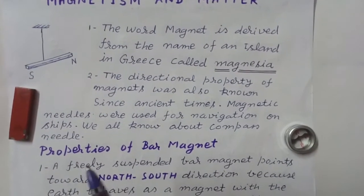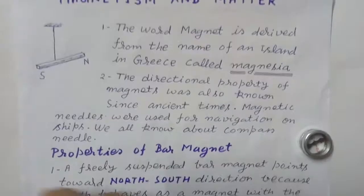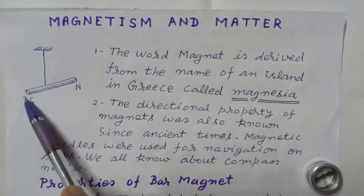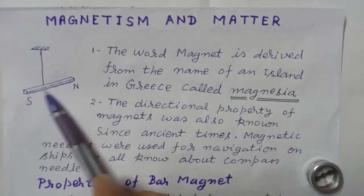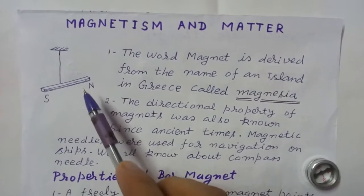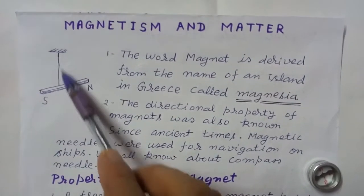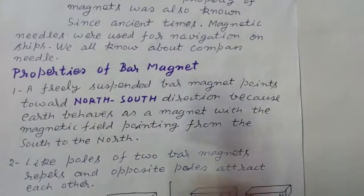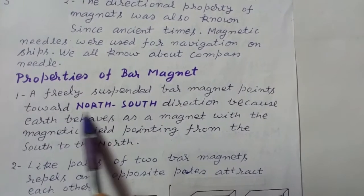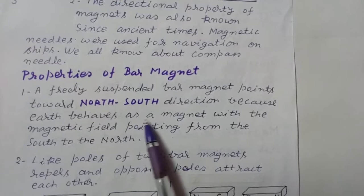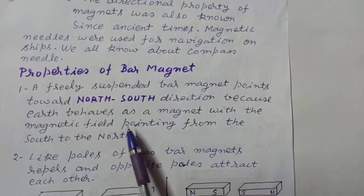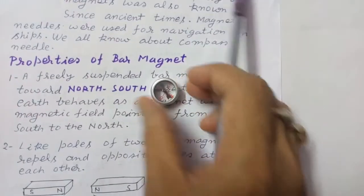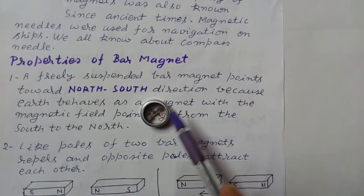Now, properties of a bar magnet. As you may see in this diagram, this is a small bar magnet. When it is suspended freely, it orients itself in the north-south direction. So a freely suspended bar magnet points towards the north-south direction because earth behaves as a magnet, with the magnetic field pointing from the south to the north.